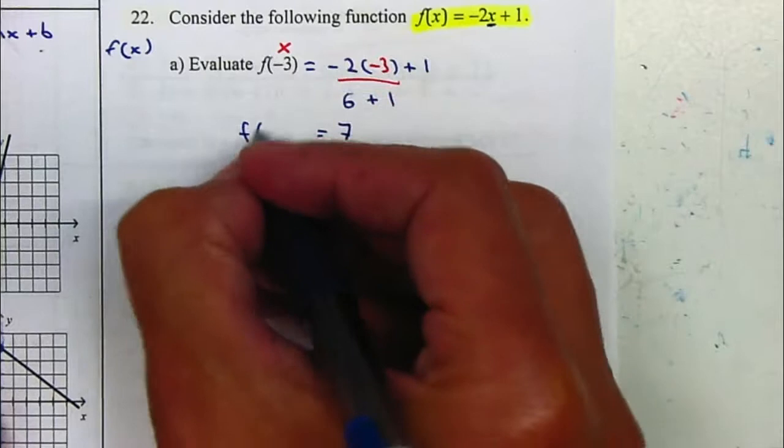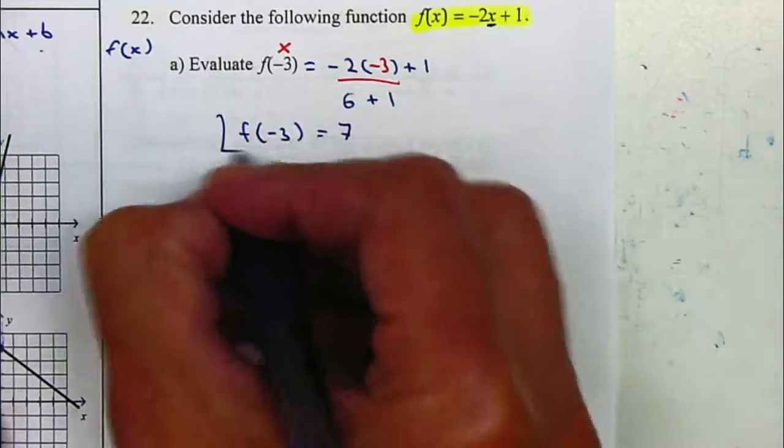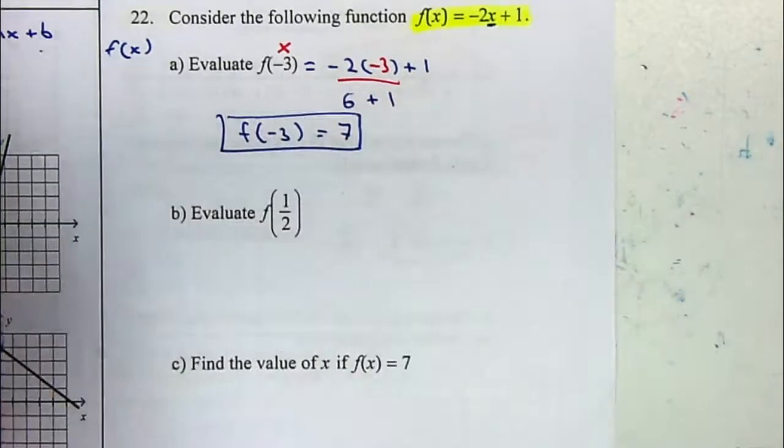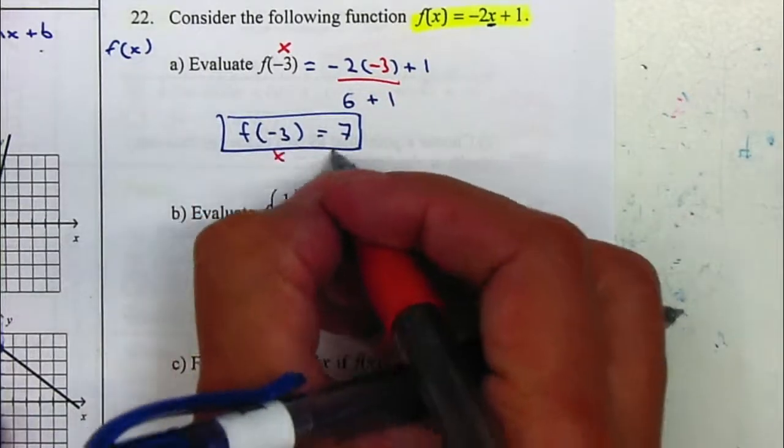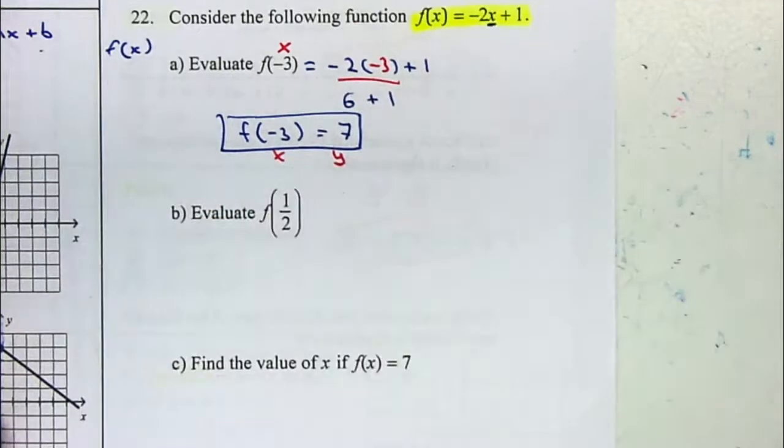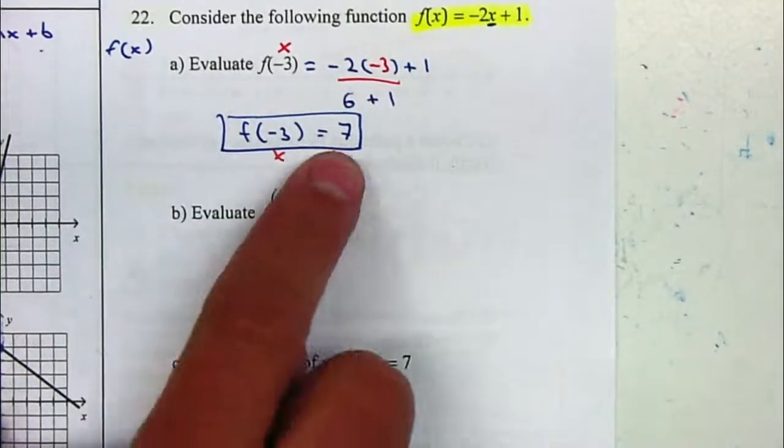Let me just copy this down, f of negative 3. This is the function notation, this is the x value, and this is the y value. So in this case, f of negative 3 will be equal to 7.